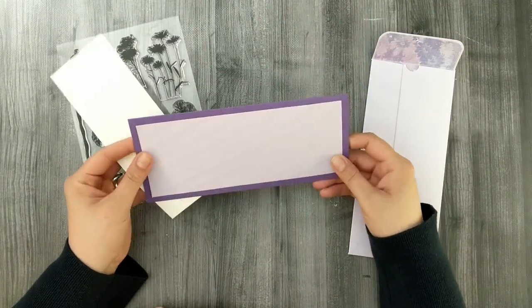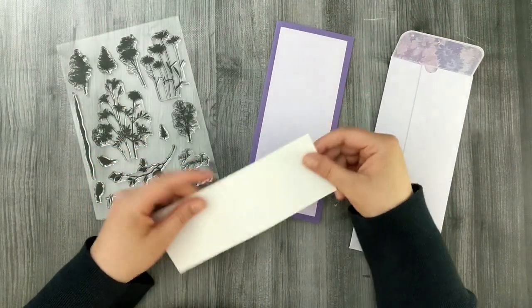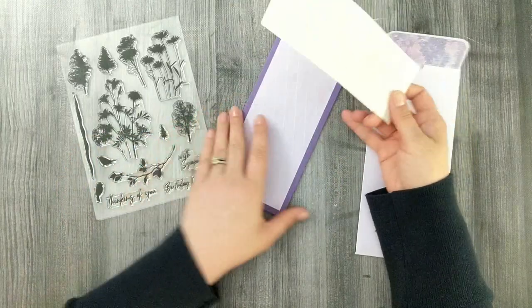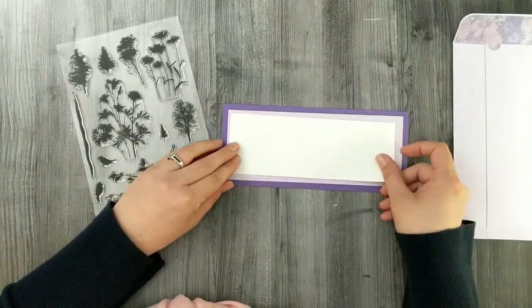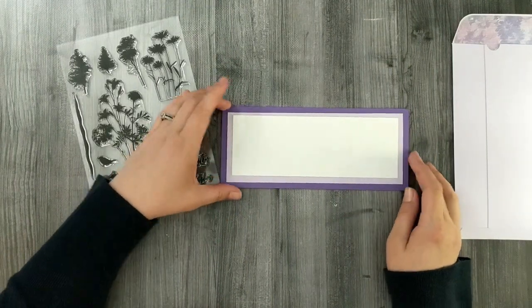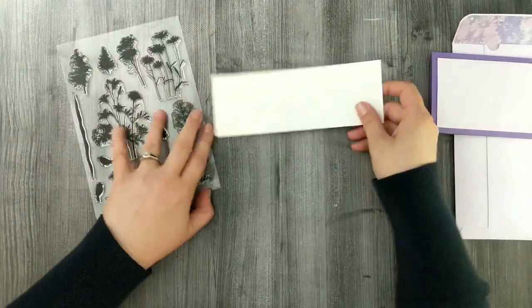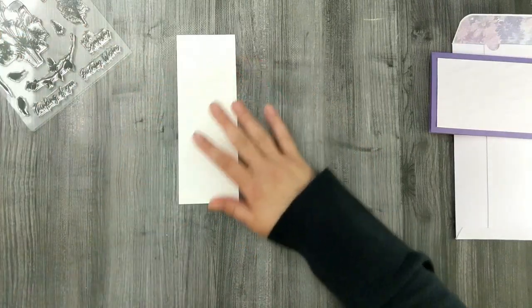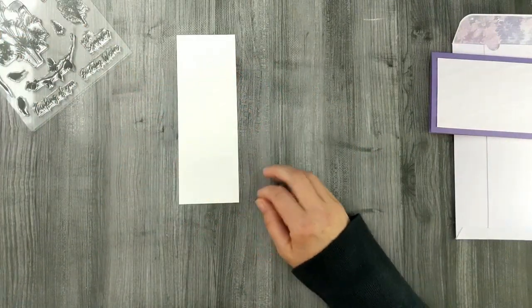Back to the card. I've got the envelope made, I've got a layer already glued down to my slimline card. I also have a piece of Gina K Designs pattern paper inside of my envelope flap as a liner just to tie everything together and create some extra special elements.